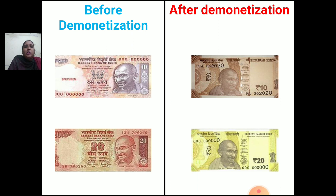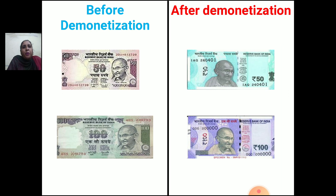On one side you can see the 10 rupee notes before demonetization and after demonetization. Before demonetization you can see the 20 rupee note — what is the color, how it looks — and after demonetization how it looks. But still we are using 10 rupee and 20 rupee notes; they are not out of stock or legally banned. Here you can see the old 50 rupee note and the new 50 rupee note — see the change of color. And here you can see the 100 rupee note; see the color of the new 100 rupee note.